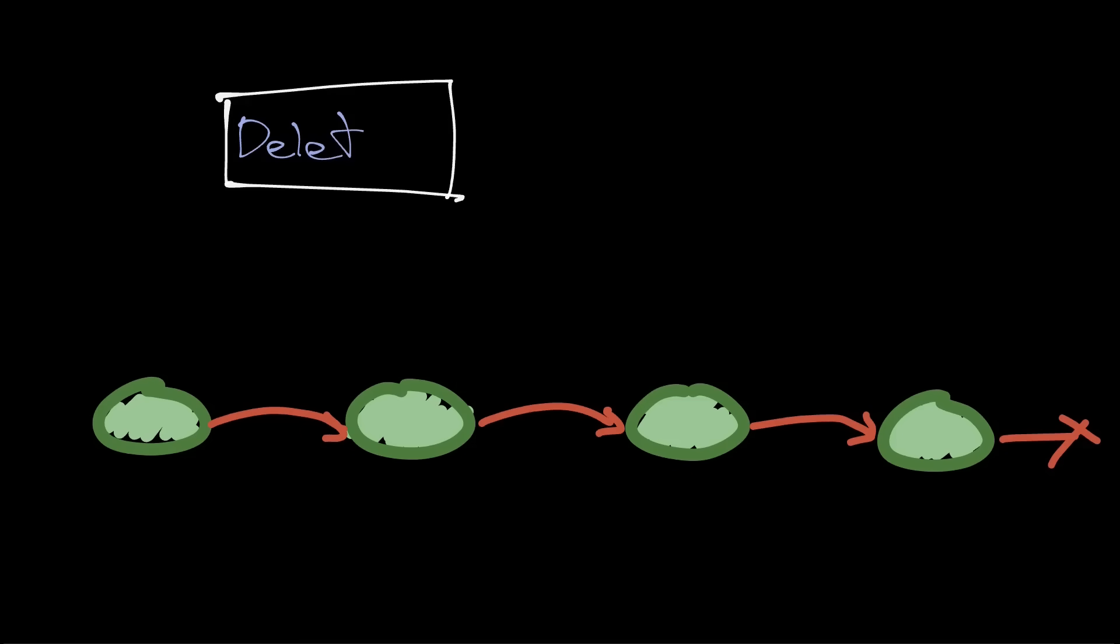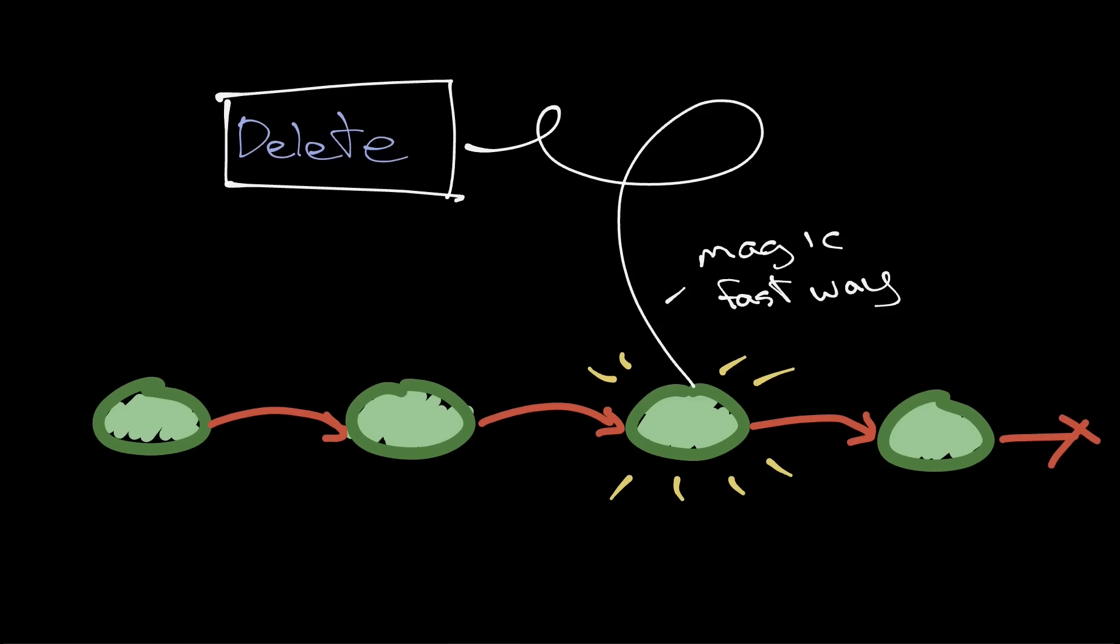With linked lists, if you have a quick way to get to the position you want to insert or delete at, the insertion or deletion itself is trivial. It costs almost nothing. But the trick is, you need to have a fast way of getting to that node. So this one, under the right circumstances, is way, way faster than an array.